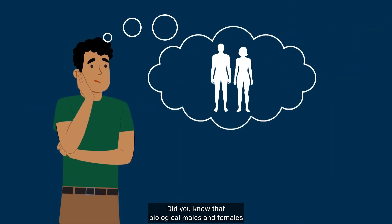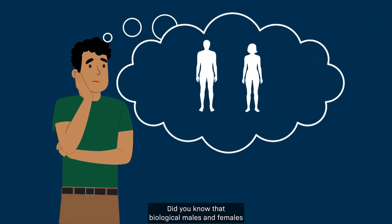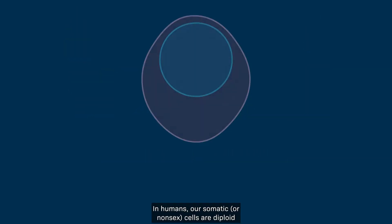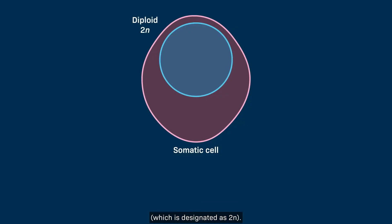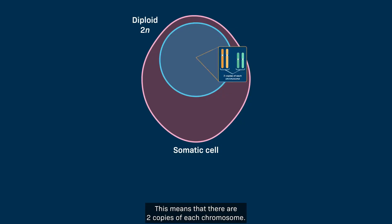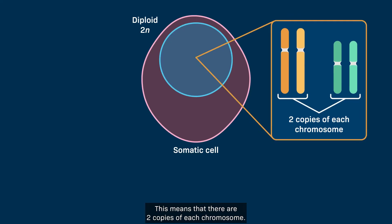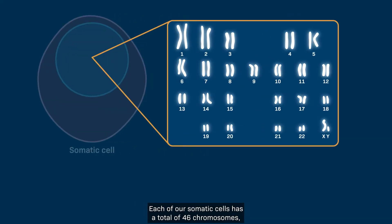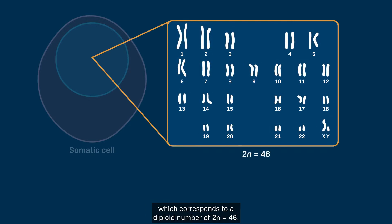Did you know that biological males and females have different processes for producing sex cells? In humans, our somatic, or non-sex cells, are diploid, which is designated as 2N. This means that there are two copies of each chromosome. Each of our somatic cells has a total of 46 chromosomes, which corresponds to a diploid number of 2N equals 46.